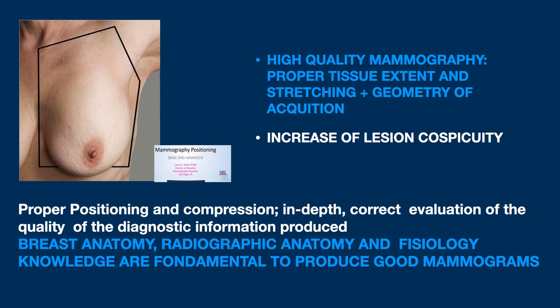The area to be documented in mammography is large. We know that a high-quality mammogram must include the maximum extension of tissue that is possible. Distension or stretching is also important. In addition, the acquisition geometry is important, which allows the documentation of the breast in a way that is faithful to the original — that is, without deformation. All this increases the possibility of detecting a lesion by those who read the images, improving what is called conspicuity.